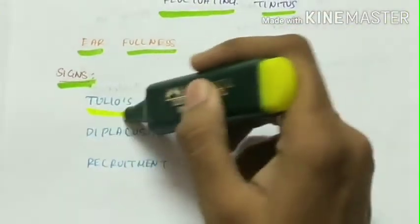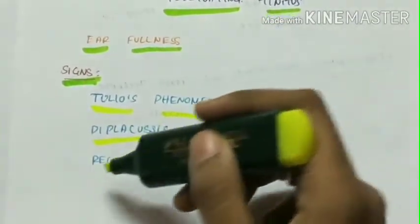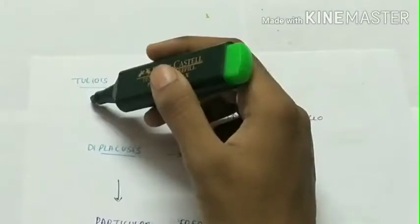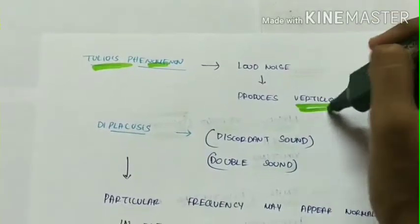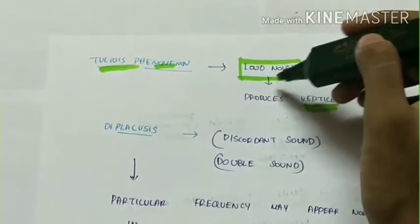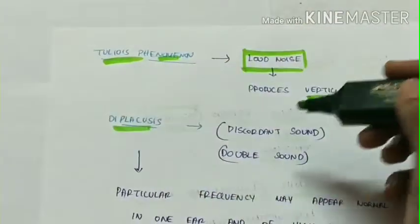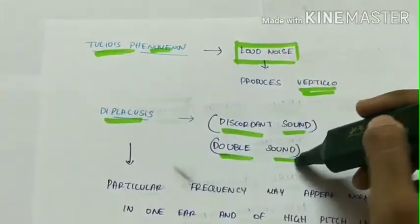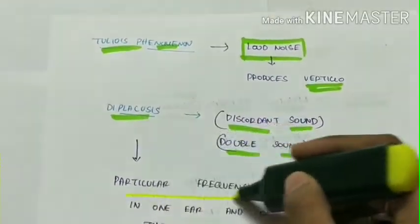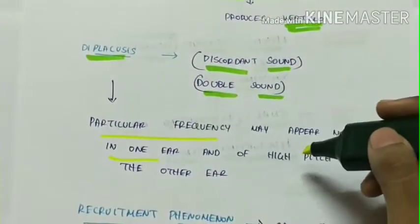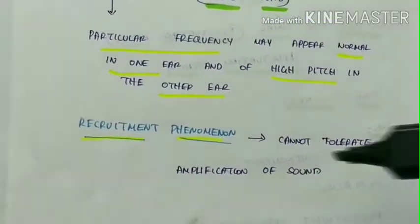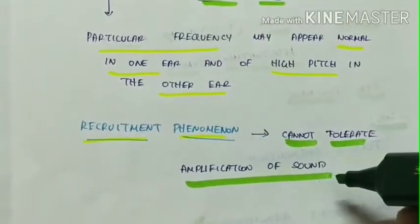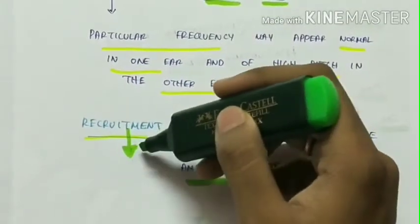Coming to the signs, the signs are Tullio's phenomenon, diplacusis, and recruitment phenomenon. Tullio's phenomenon is the induction of vertigo because of loud noise. Diplacusis is discordant sound or double sound. Here a particular frequency of sound may appear normal in one ear and the same appears as high pitch in the other ear. Third is recruitment phenomenon in which the patient cannot tolerate amplification of sound, and recruitment phenomenon indicates that the disease is of cochlear origin.